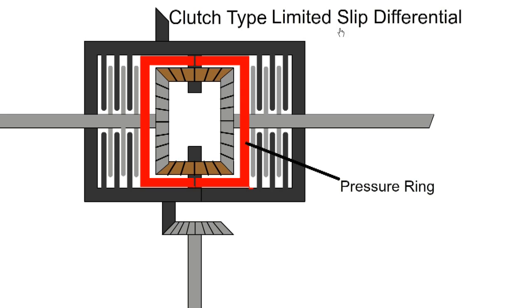Another option is the Clutch Type Limited Slip Differential, LSD. The cage has clutch plates attached to it, while the half shaft has a separate set of clutch plates. There is a pressure ring which surrounds the pin of the planet gear.